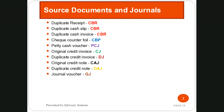When it comes to the source document, normally when you see the word 'duplicate' or 'copy,' it means you as the business were the one who sold to someone else — you were the one offering the service. That's why you retained the duplicate. Duplicates are retained by the issuers of those source documents. If I'm selling to my customers, I give them the original and I retain my duplicate. We care about what we retained after issuing those source documents. So 'original' means you are the buyer, and 'duplicate' means you have been the provider or seller of that particular product.